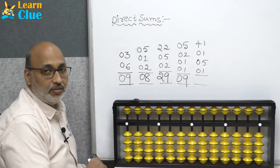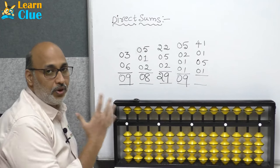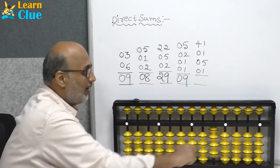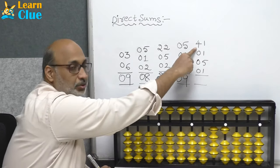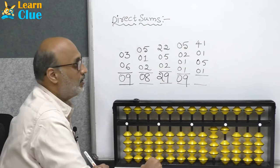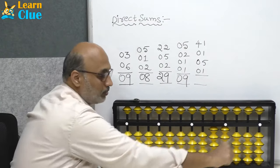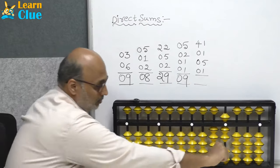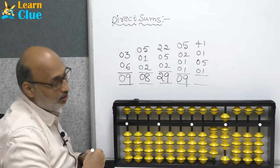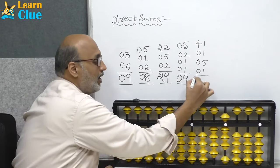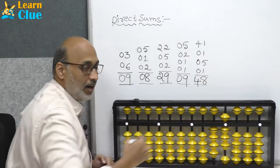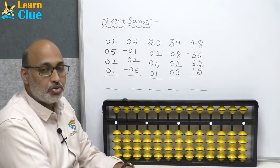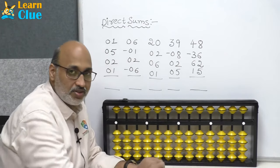Now we will see the last problem: 41. Which one do we place first? Exactly — 40 first, then 1. So 41 is placed successfully. Now they are asking plus 1, plus 5, again plus 5, again plus 1. What is the answer? 48 is the answer.